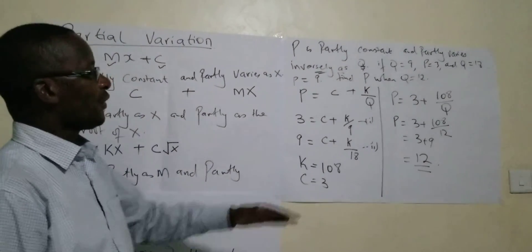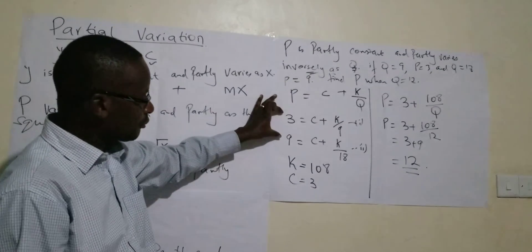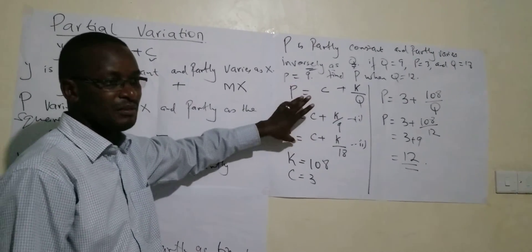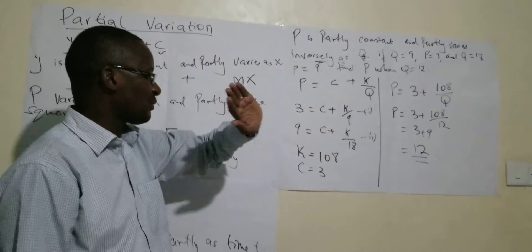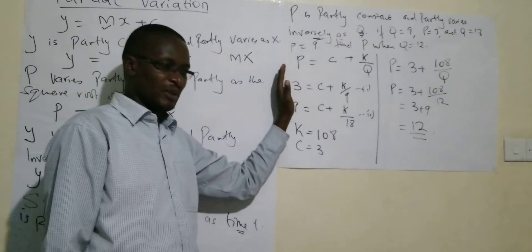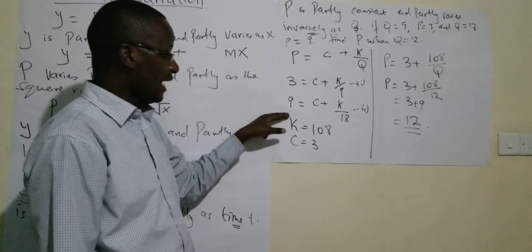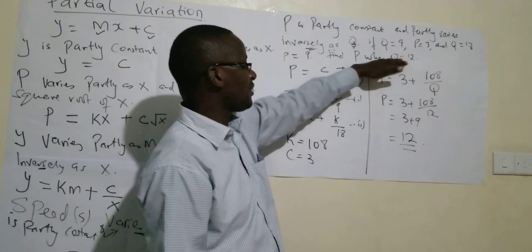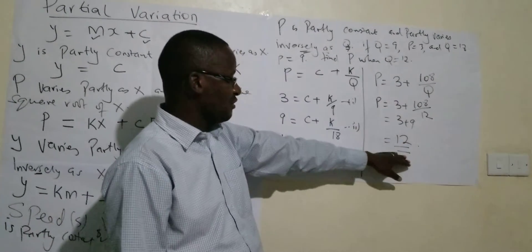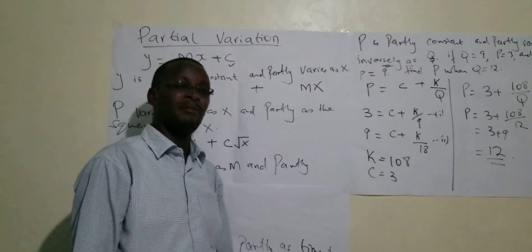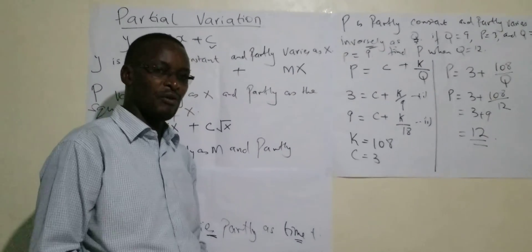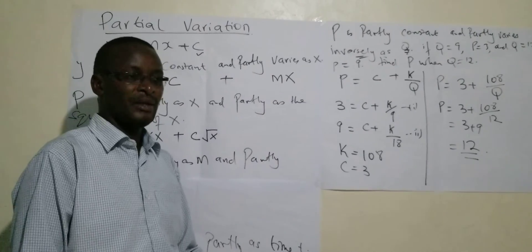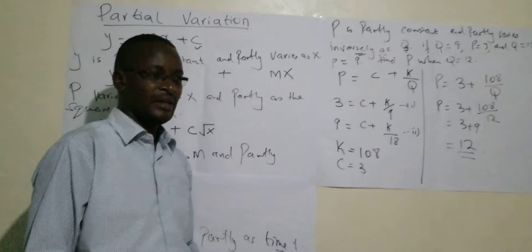When you are given more information, you will get two equations. Whether there was a constant or another variable, it doesn't matter — you get two simultaneous equations, solve them, and get the two constants. After you get the two constants, substitute them in the original equation so that from there you can substitute the variable you have been given to get the answer. I will give you an assignment on the same, and that brings us to the end of this topic. I hope everything has been clear. In case there are any questions, you can inbox me or raise them with the class for further discussion. Thank you very much. God bless you.